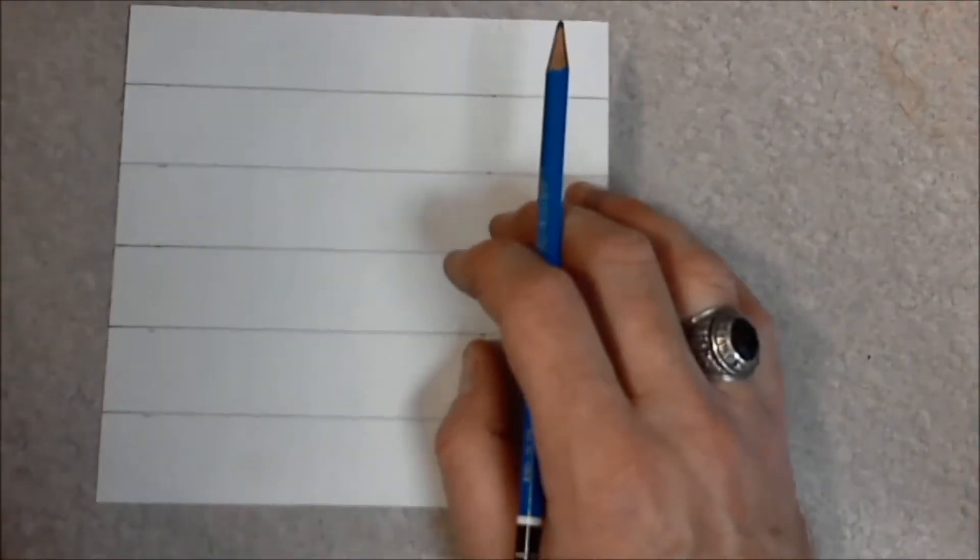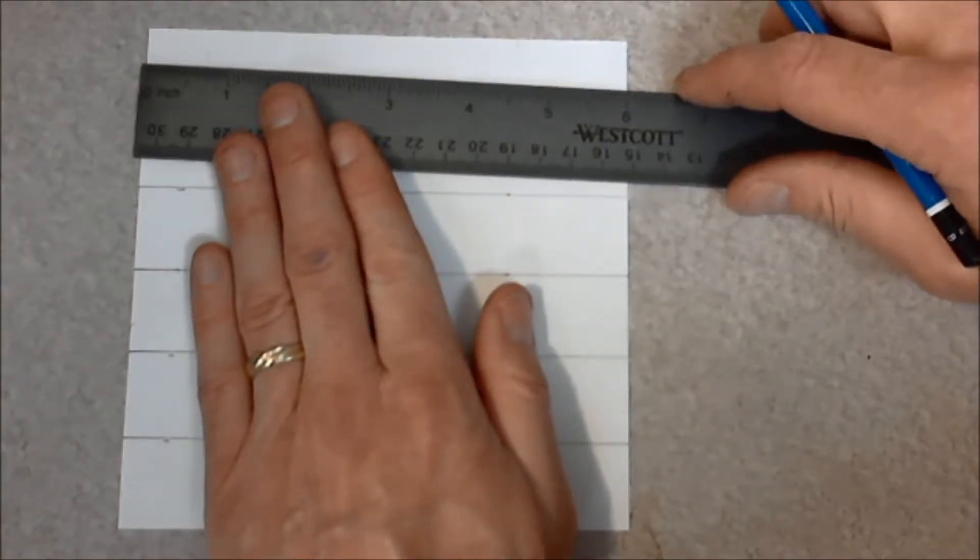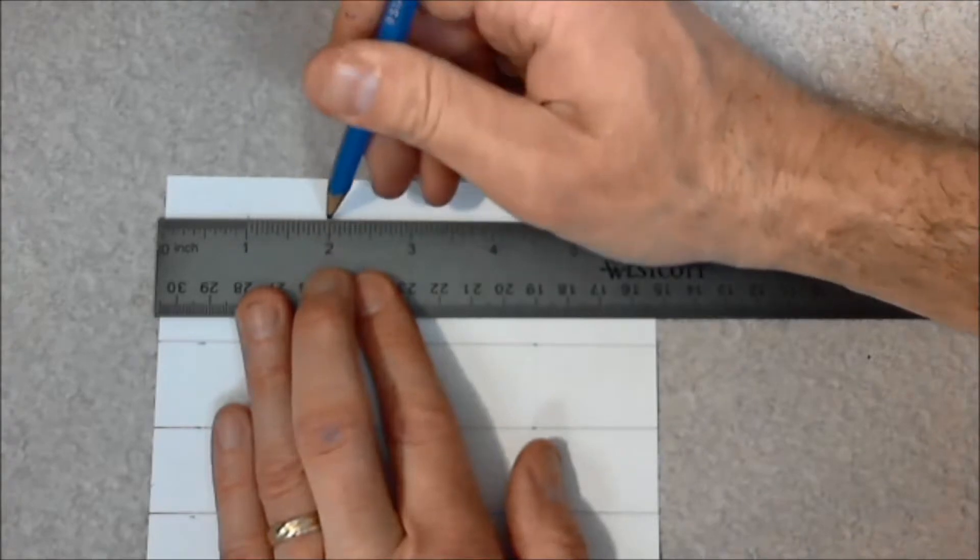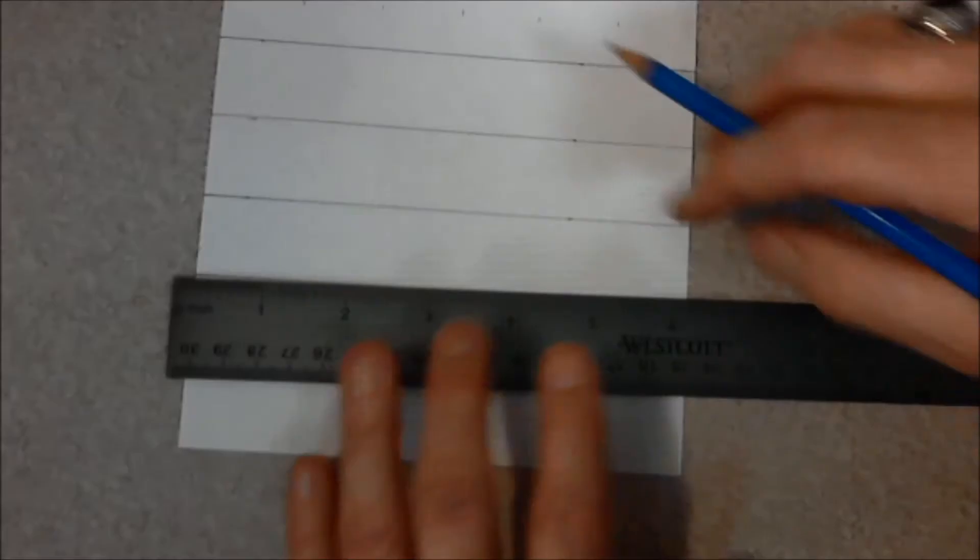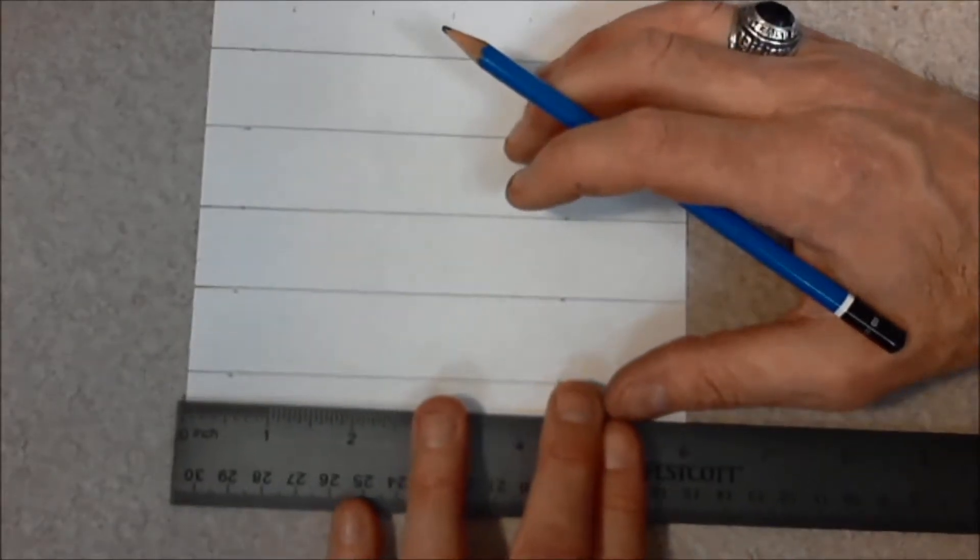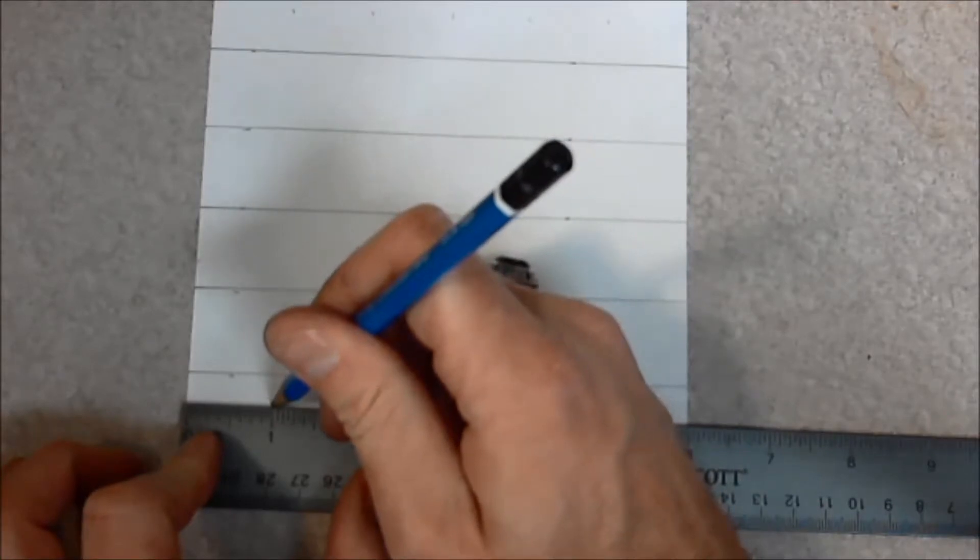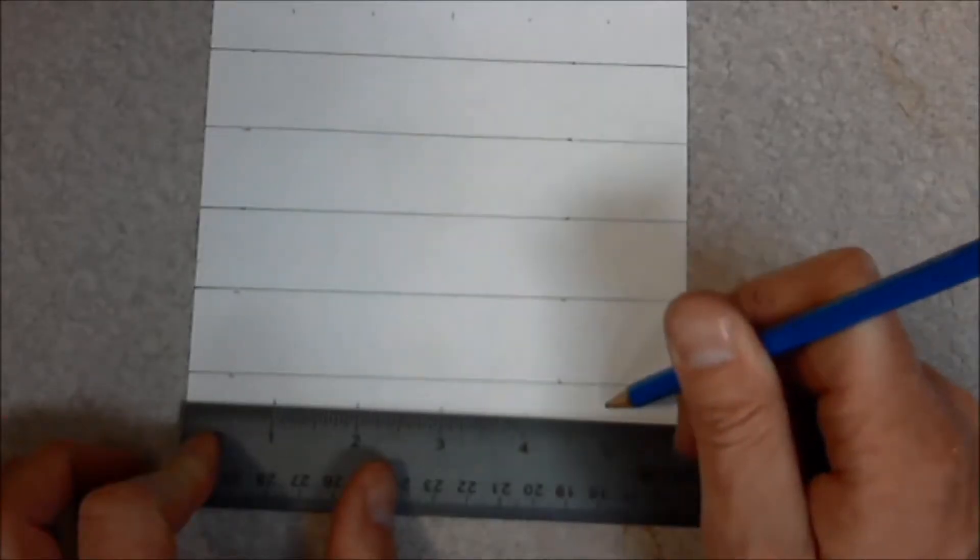And then I'm going to turn my paper sideways. And I'm going to do the same thing. I'm going to mark that off at the top. One, two, three, four, five. And I'm going to slide my ruler down. Do the same thing at the bottom. One, two, three, four, five.